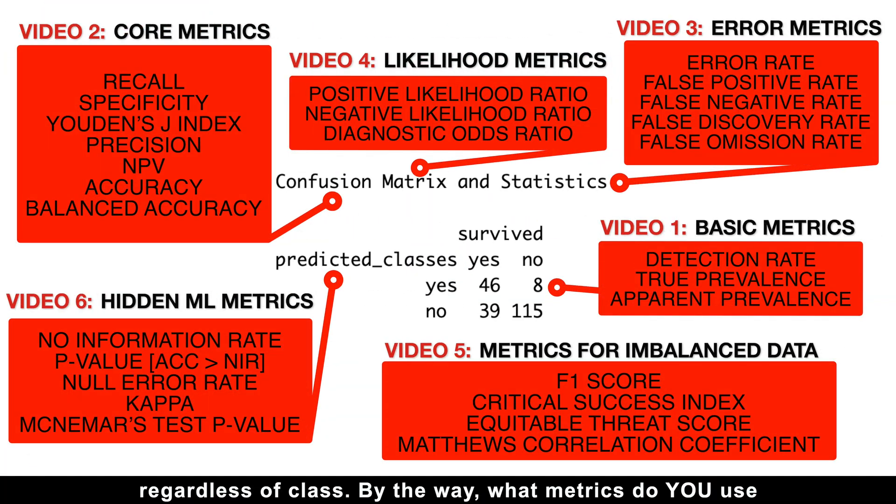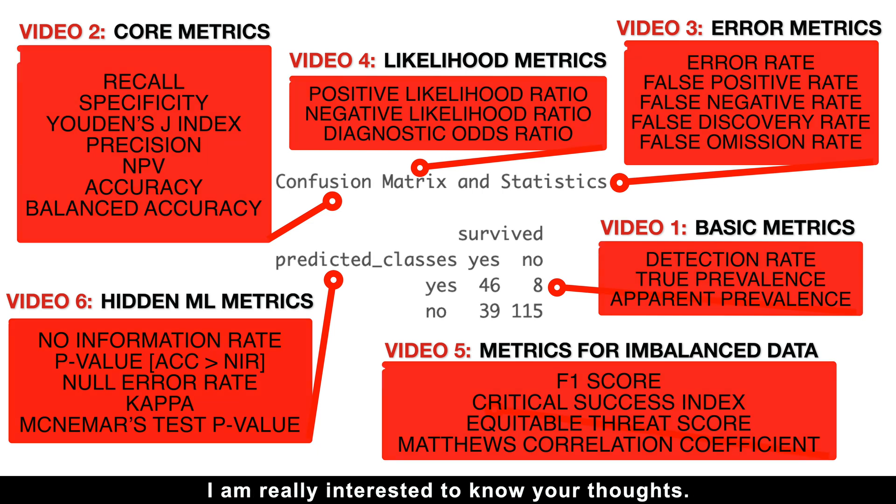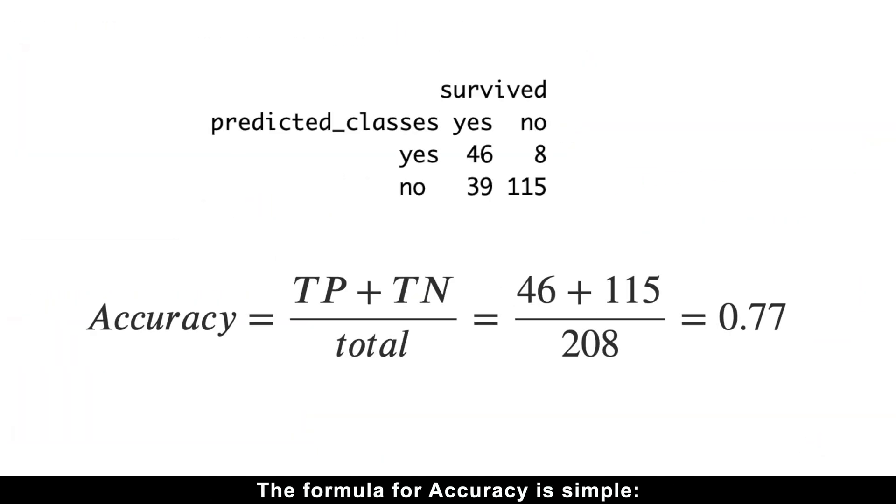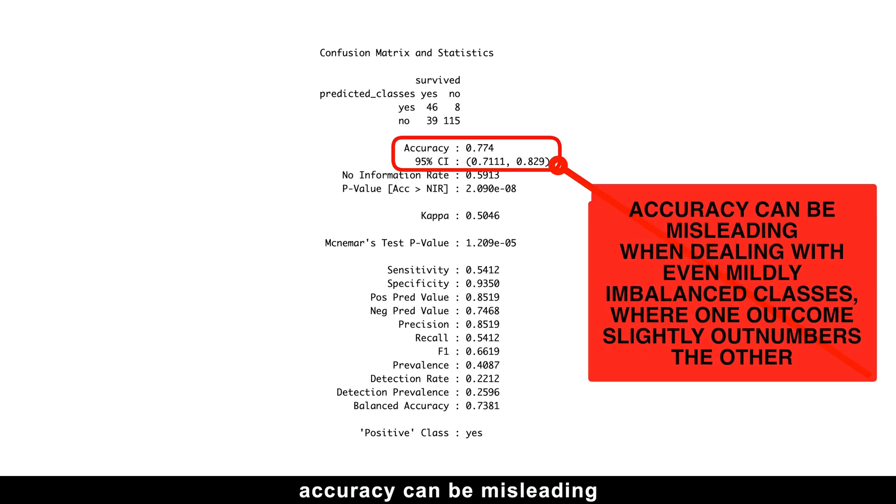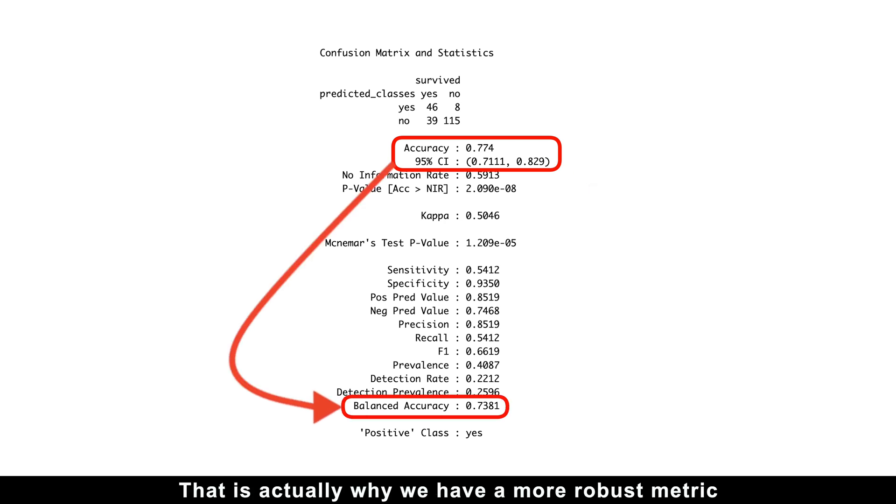By the way, what metrics do you use, and which are the main metrics, in your opinion? I'm really interested to know your thoughts. The formula for accuracy is simple. Add true positives and true negatives, and divide by the total number of cases. And that's it. Pretty unspectacular, right? While a higher accuracy is generally what we want, accuracy can be misleading when dealing with even mildly imbalanced classes, where one outcome slightly outnumbers the other. That is actually why we have a more robust metric like balanced accuracy at all.